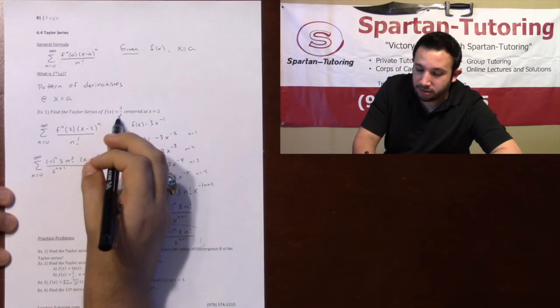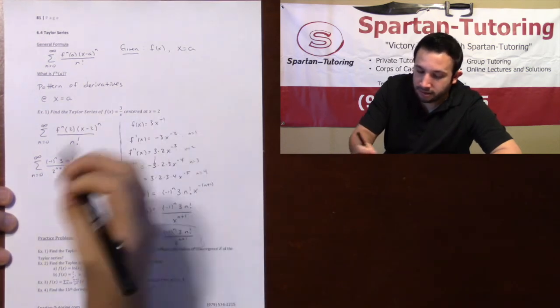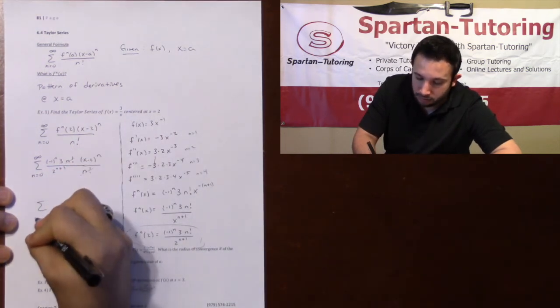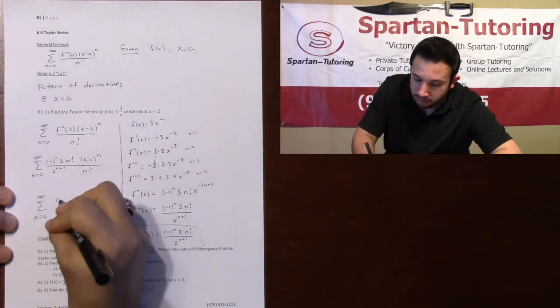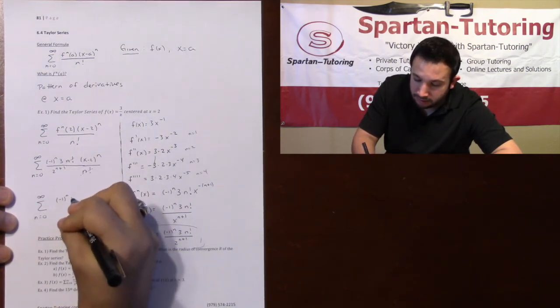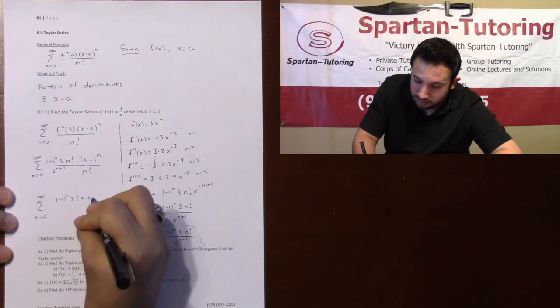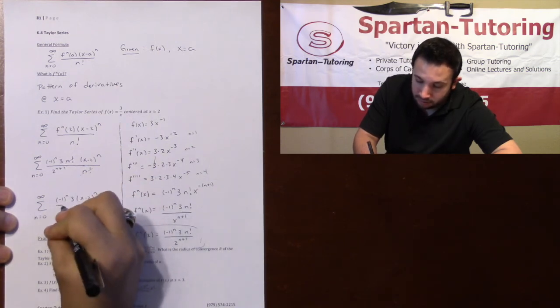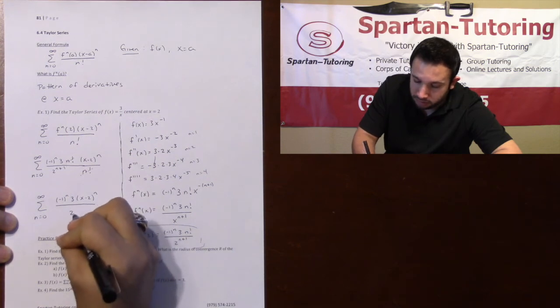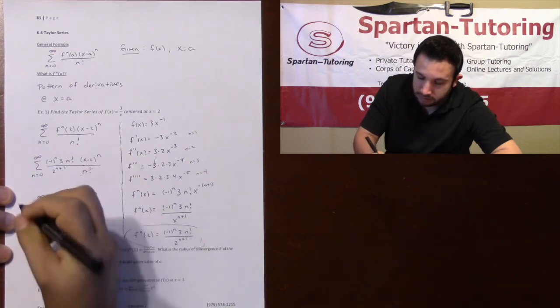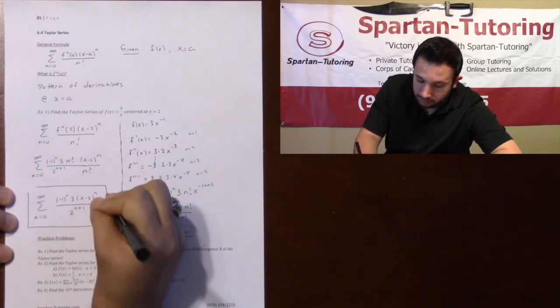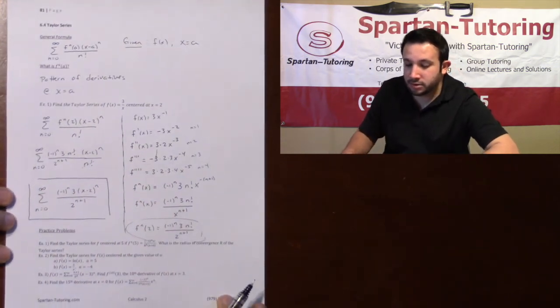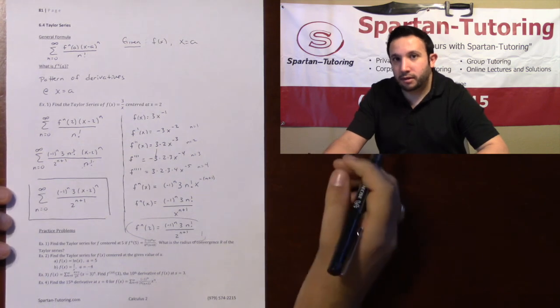And so your final answer, your Taylor series for this function, centered at 2 would be the sum from n equals 0 to infinity of negative 1 to the n times 3 times x minus 2 to the n all over 2 to the n plus 1. And this is how you're going to find a Taylor series for any function centered at any number.